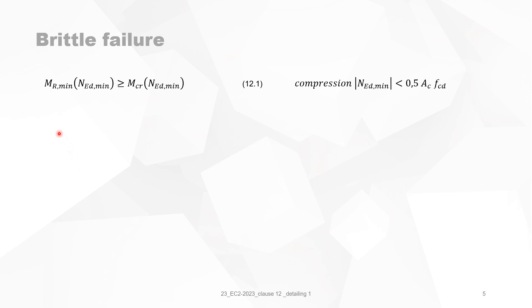Now let's consider formula 12.1 and how we can calculate AS min from it. First of all, when NED is compression there is a limit: you cannot take into account more compression than 0.5·AC·FCD. We will see why this is the case.